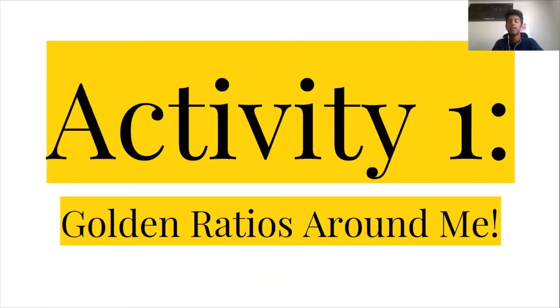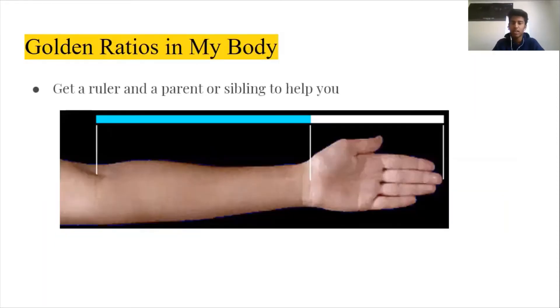So activity one, golden ratio surround me. And for this one, you'll need a calculator, a ruler, and maybe a parent or sibling to help you. So I would like you to measure your elbow, the distance from your elbow to your wrist, and then also measure the distance from the bottom of your wrist to the tip of your fingers, and divide these two lengths and see what number you get. You should get around 1.618, which is phi itself. And also, if you take the length of the bottom of your hand to the bottom of your fingers, and take the length of the bottom of your fingers to the tip of your fingers and divide those two numbers, that ratio should equal the golden ratio.